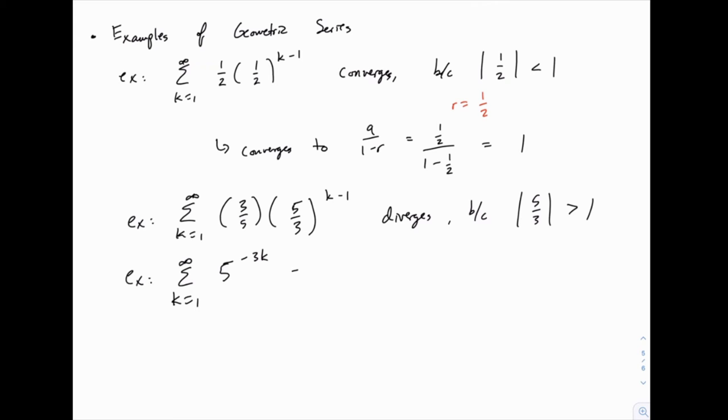So when k equals 1, you would have 5 to the negative third power, or 1 over 5 to the third. Then when k equals 2, you'd have 5 to the negative sixth. When k equals 3, you'd have 5 to the negative ninth. And notice that it is geometric because it fits that pattern of multiplying by a consistent value each time.